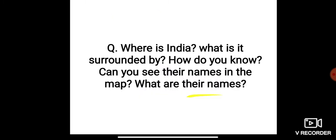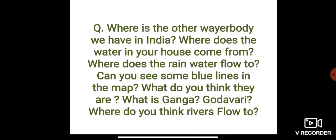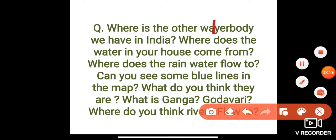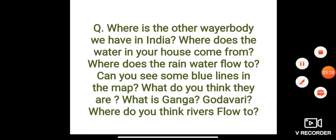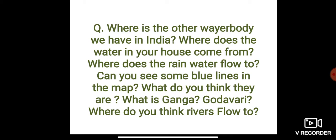Where is the other water body we have in India, apart from sea and ocean? Where does the water in your house come from? Where does the rainwater flow to? Can you see some blue lines in the map? What do you think they are?